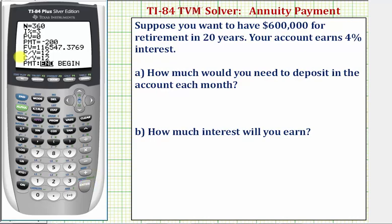N is equal to the total number of compounds over the total time period. Because we're making monthly payments, we'll assume the interest is also compounded monthly. So if the interest is compounded monthly for a total of 20 years, N would be 20 times 12. We can enter 20 times 12 here, or simply enter 240.